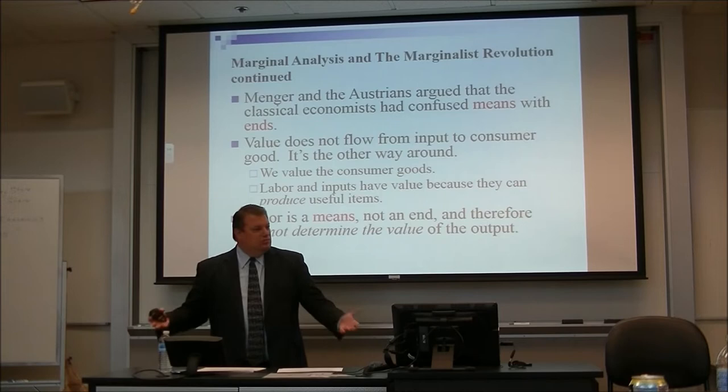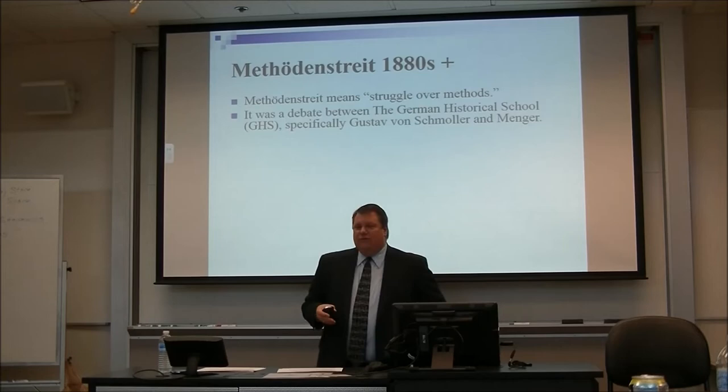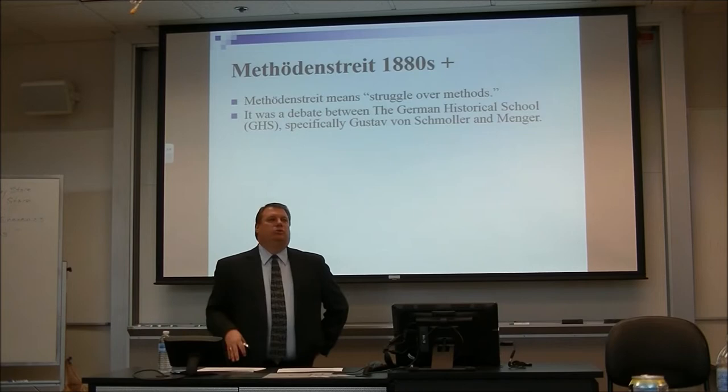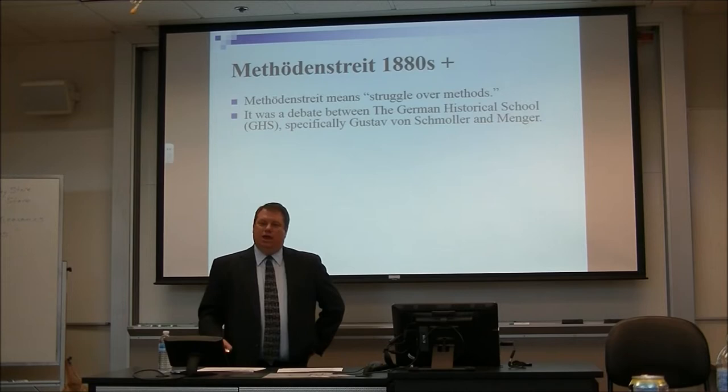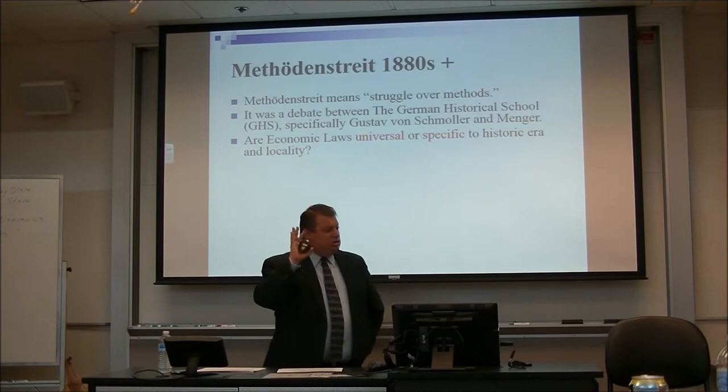Let's take a look at the Methodenstreit — basically the struggle over methods. We have two groups: the German Historical School headed by Roescher and then his protégé Gustav von Schmoller, arguing against Menger. The argument is: are economic laws universal, or are they specific to a particular historic era, locality, or nationality?